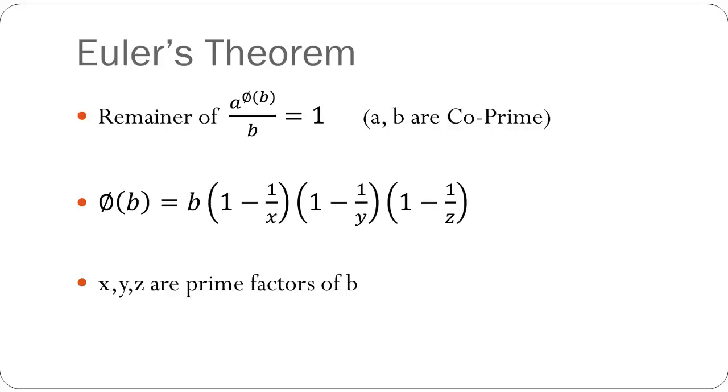Now the general format of Euler's theorem is that whenever you are asked to find the remainder of the form a raised to phi(b) upon b, then the value will be 1. Now you might ask, what is phi of b? Phi of b is the Euler's totient and it's given by b times (1 minus 1/x) times (1 minus 1/y) times (1 minus 1/z), where x, y and z are the prime factors of b.